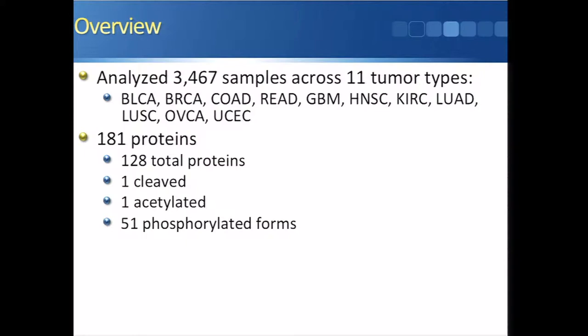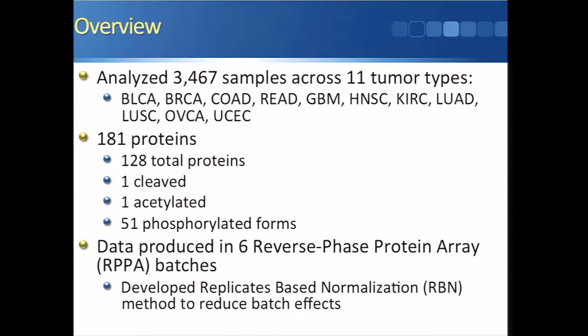We had 181 proteins in total: 128 total proteins, one cleaved, one acetylated, and 51 phosphorylated forms. The data were produced in six reverse-phase protein array, or RPPA, batches. This is a platform for generating protein expression data.